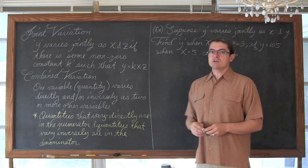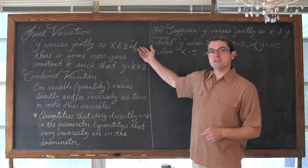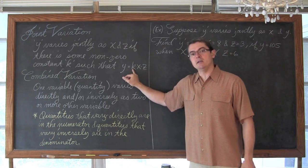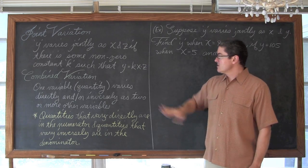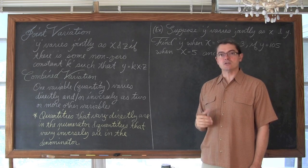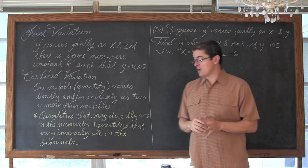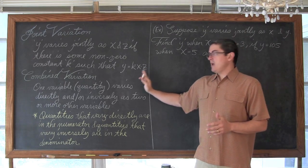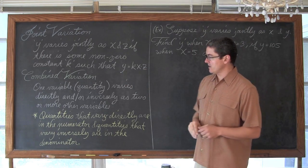Joint variation is when y varies jointly as x and z if there is some non-zero constant k such that y equals k times x times z. So it's kind of like just an expanded form of your direct variation — it's just that there are more than two variables being directly related to each other. Now this is kind of a special case of the more general idea of combined variation.